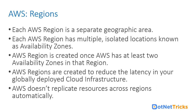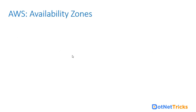AWS does not replicate resources across regions by default, due to data residency laws and various compliance measures. Inside a region, many services replicate data over different facilities to increase durability and meet fault tolerance SLAs. Cross-region replication is achievable but requires manual intervention — you must yourself configure that particular feature.